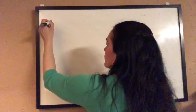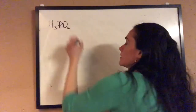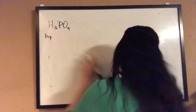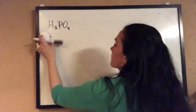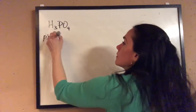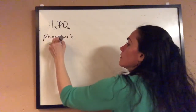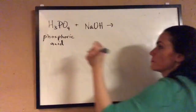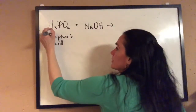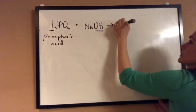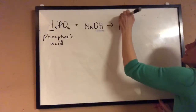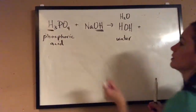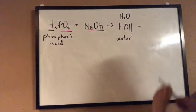Let's do another example. Let's take phosphoric acid — H3PO4 — which is found in a lot of soft drinks, especially Cokes and Pepsis. Let's react phosphoric acid with sodium hydroxide. It's still a double replacement reaction, so the cation hydrogen combines with the anion hydroxide to give us water, HOH — H2O. The other product is sodium with phosphate to give us sodium phosphate.